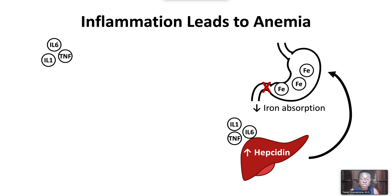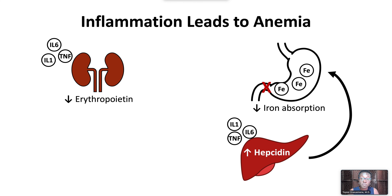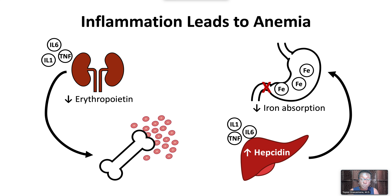Inflammatory cytokines also act on the kidneys to blunt the erythropoietin response to anemia, which leads to decreased bone marrow production of red blood cells.